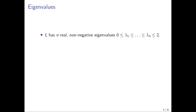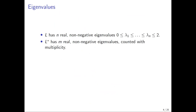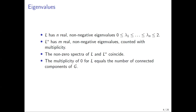The Laplacian L has n real non-negative eigenvalues, always between 0 and 2, where n is the number of vertices. The dual Laplacian has m real non-negative eigenvalues — the number of edges — and the non-zero spectra of these two Laplacians coincide. The multiplicity of zero for L equals the number of connected components of G, so zero is always an eigenvalue, while the multiplicity of zero for the dual Laplacian equals the number of cycles of the graph.